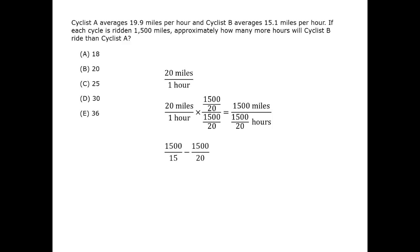Now, finding the difference, we have 1,500 over 15 minus 1,500 over 20. We could compute directly, but we could also find a common denominator of 60 and look for things to cancel.